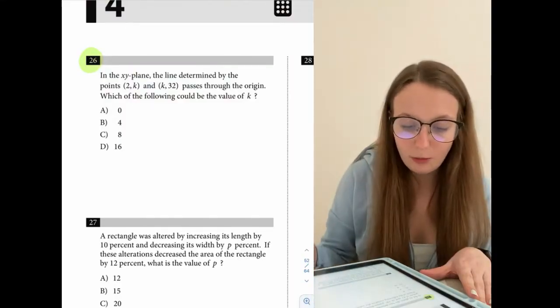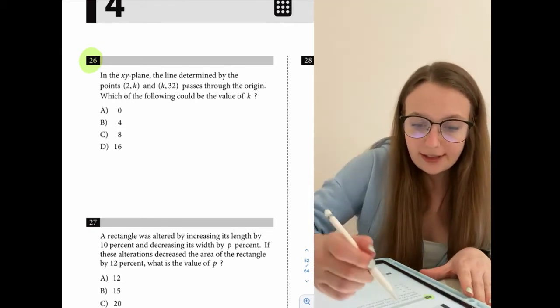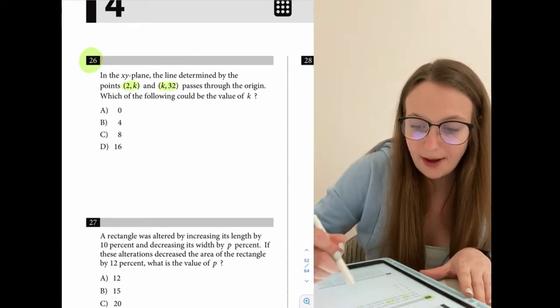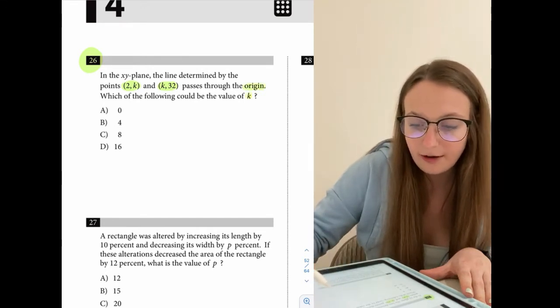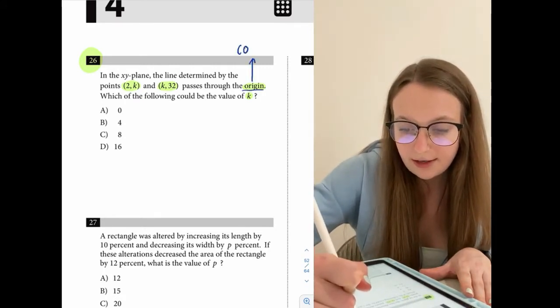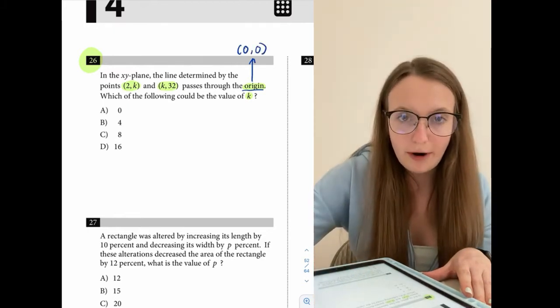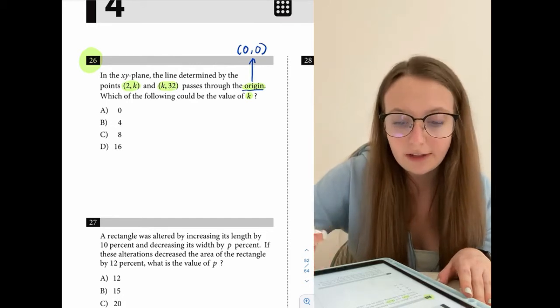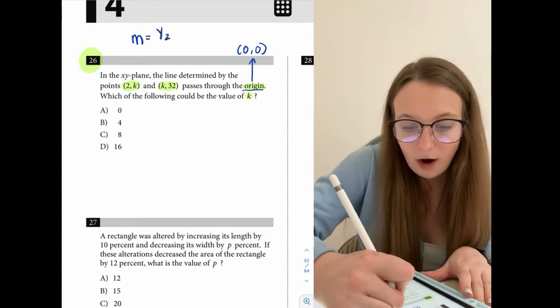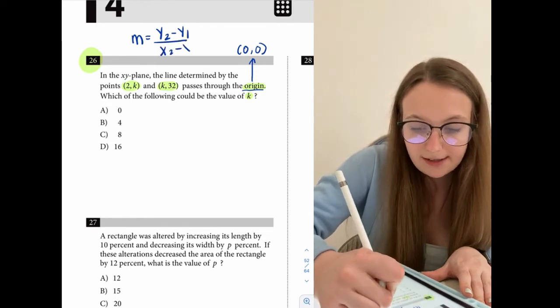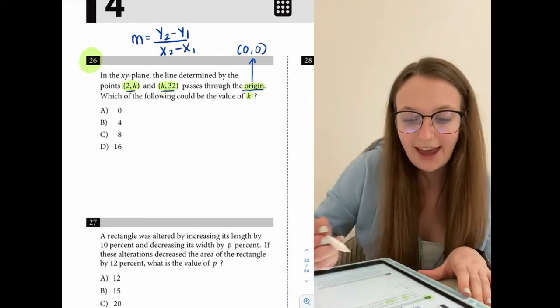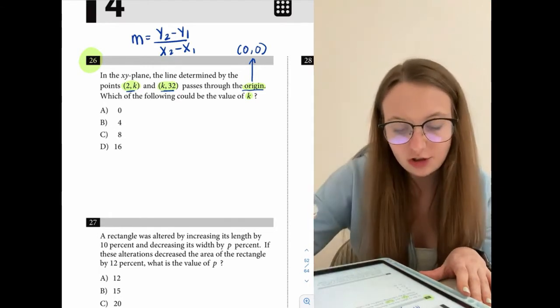Alrighty, so we are first going to begin with question number 26. They tell us in the question, the line determined by the points (2, k) and (k, 32) passes through the origin and we're asked for a possible value of k. So first and foremost, we definitely need to be aware of the fact that the origin refers to the point (0, 0). And when I'm seeing all of these points, the first thing I'm thinking of is finding out what the slope is. So the slope formula, this will not be provided, so you definitely have to have this memorized, is y2 minus y1 over x2 minus x1. So you might initially be tempted to try to find the slope of the two points that contain k. Let me show you though why that really wouldn't be helpful at all before we actually do this the right way.